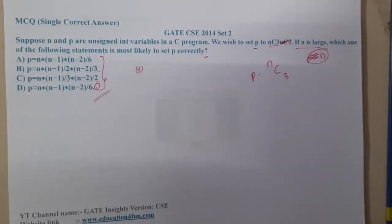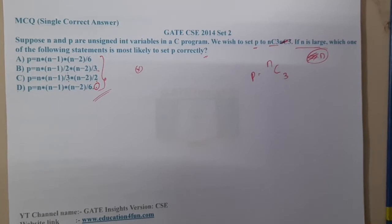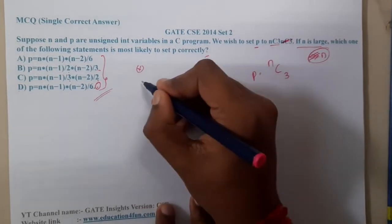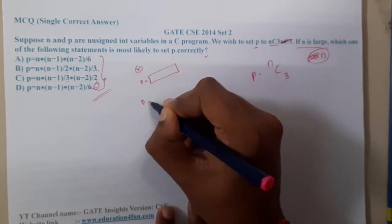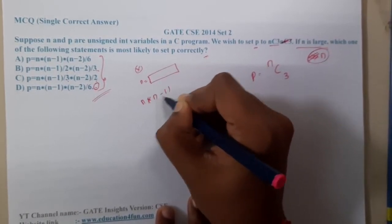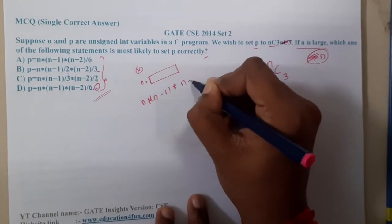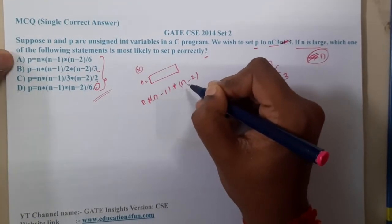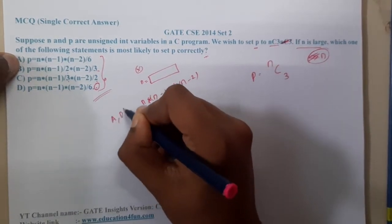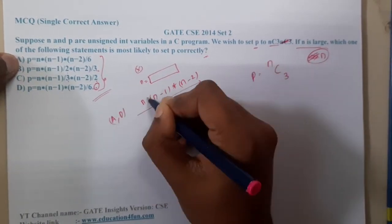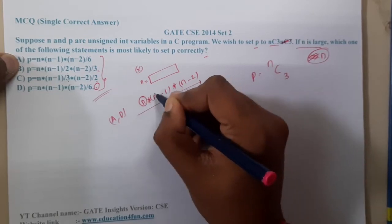This question cannot be solved with substitutions, only with your understanding. Assume that you took the value of n really, really large. If you multiply that n with n minus 1 and again multiply with n minus 2, I'm talking about options A and D.